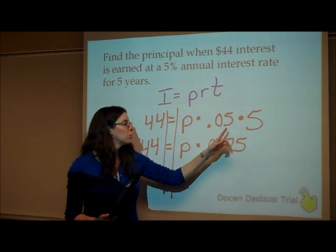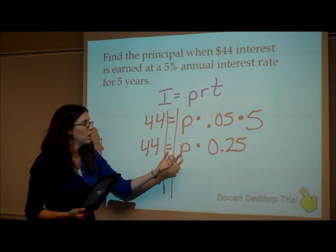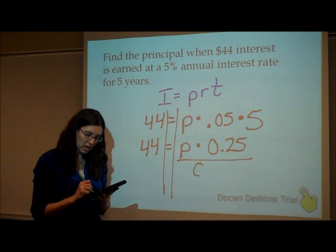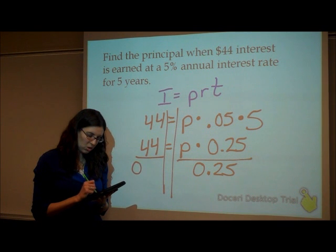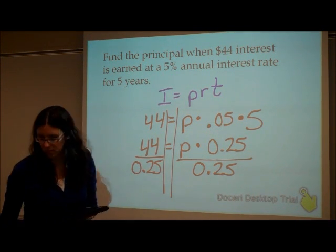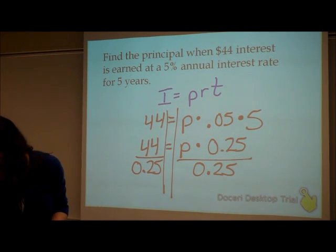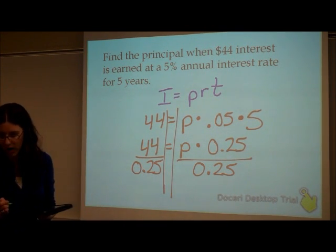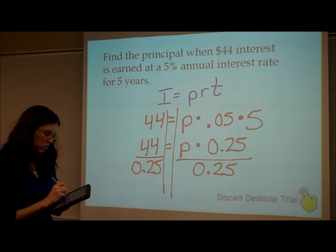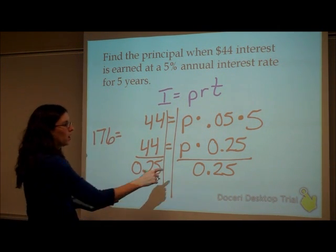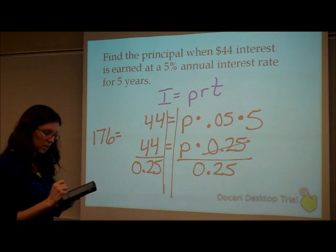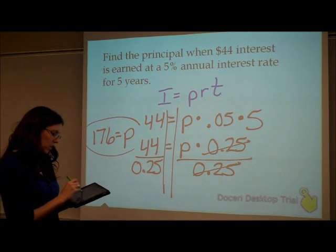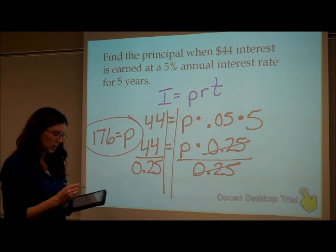So now I know that the principal times 0.25 is equal to 44. So to solve for the P, I want to divide both sides by the 0.25. So 44 divided by 0.25 is 176. And then over here, multiplying and then dividing, cancel each other out, is left with P. So our principal is $176.